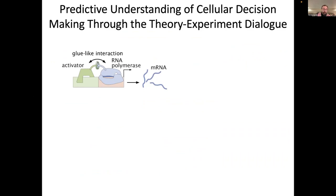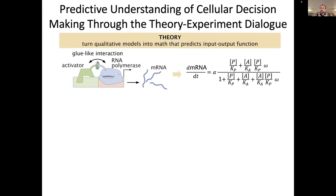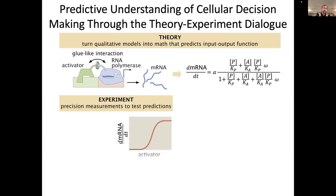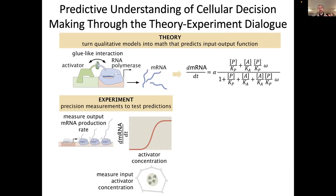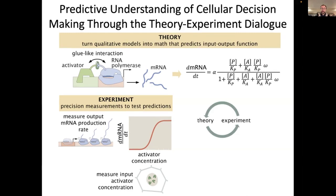The way we do this in my lab is by engaging in the dialogue between theory and experiment that has been the hallmark of the physics approach for the last 500 years. We grab cartoon models or qualitative models of biological function that you might find in textbooks, and we turn them into precise mathematical statements that predict, for example, how the output rate of transcription is dictated by the input concentration of activator. Then we go into the lab and measure this input, measure the output in order to test the model.